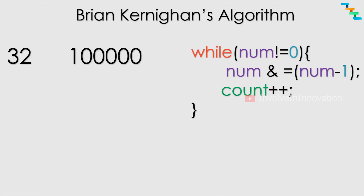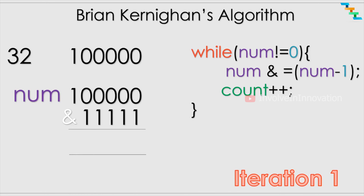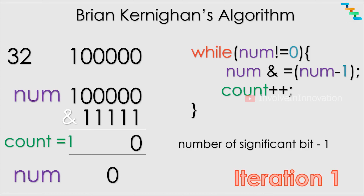Applying Brian Kernighan's algorithm to 32: in iteration one, the number is 100000 (binary of 32). Subtracting 1, the rightmost set bit is at index 5, so all bits from index 5 onward get flipped, giving 011111. AND with 100000 gives 0. The iteration count is 1 and the number is now 0, so we break the loop. The number of significant bits in 32 is 1.